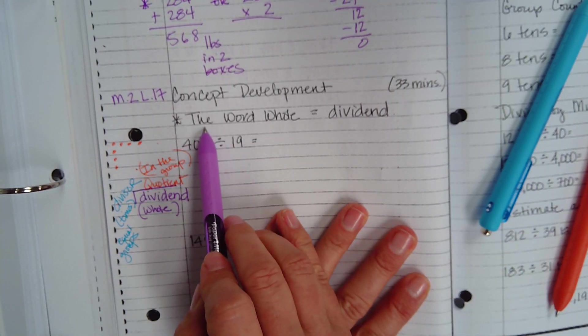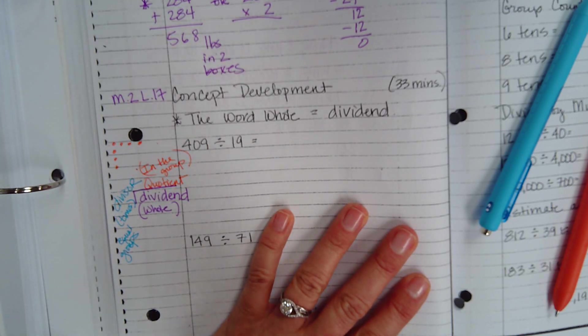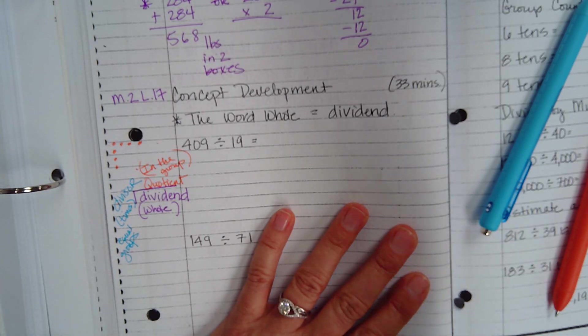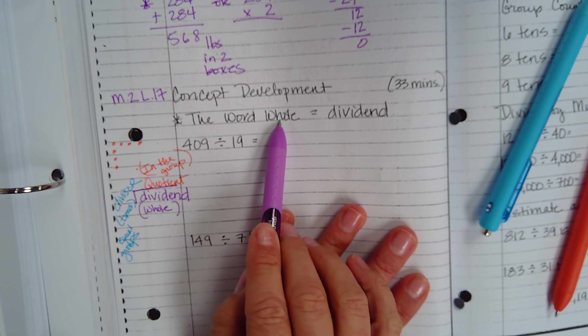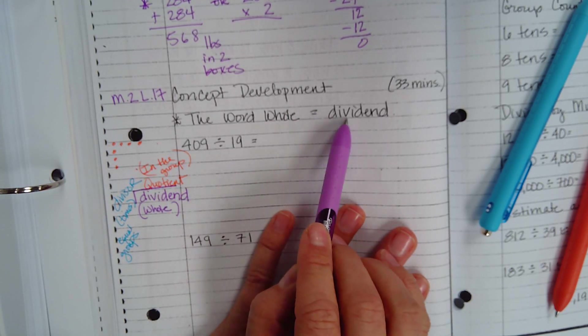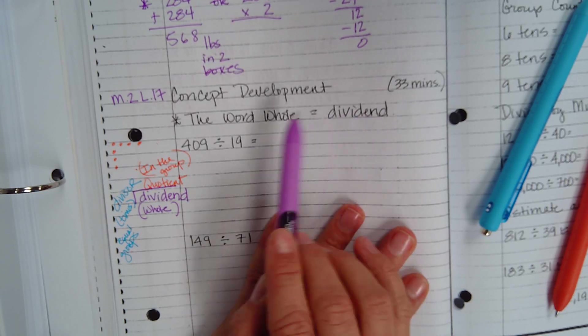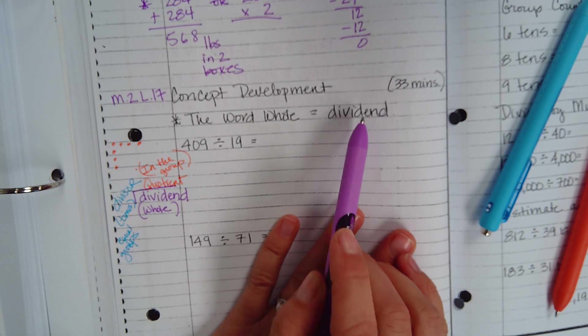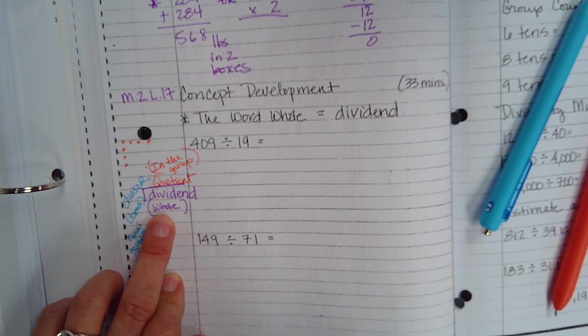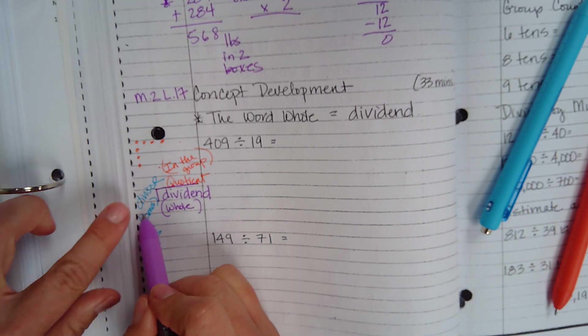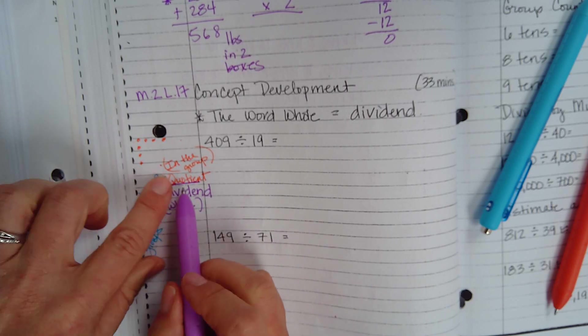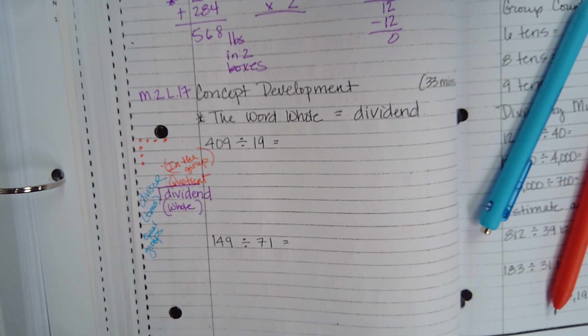All right, so as we move forward, I want you to have this connection. I want you to have this essential knowledge. I want you to have this enduring understanding. The enduring means it doesn't leave you. It stays with you. So I want you to have the enduring understanding that the word whole means dividend. The word whole means dividend. The whole is the dividend. It's what you're going to break up. It's the actual thing you're going to separate. And this outside tells you how many times you're going to separate it. The quotient tells you how many are inside each group.